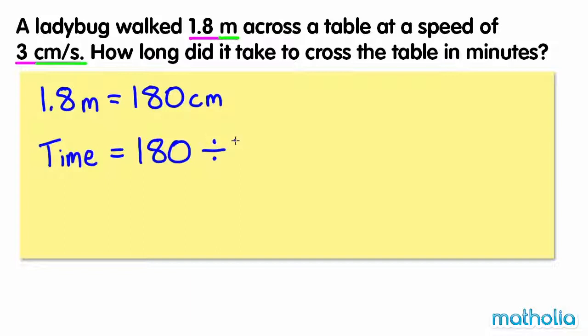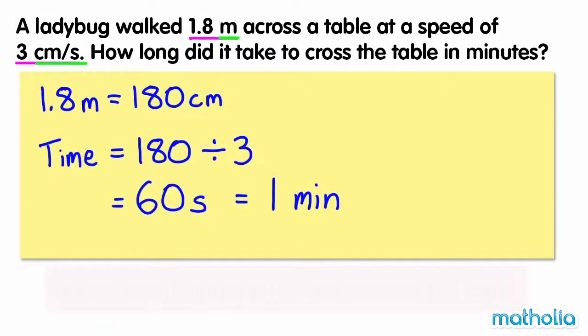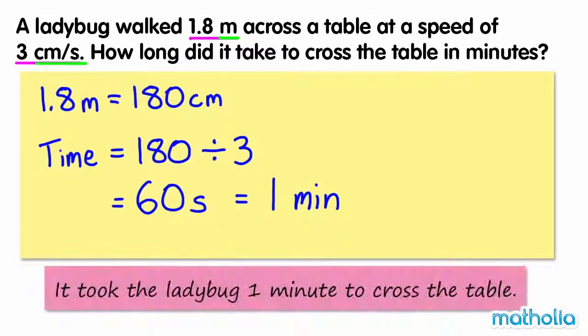180 divided by 3 equals 60. We must give the time in minutes. 60 seconds equals 1 minute, so it took the ladybug 1 minute to cross the table.